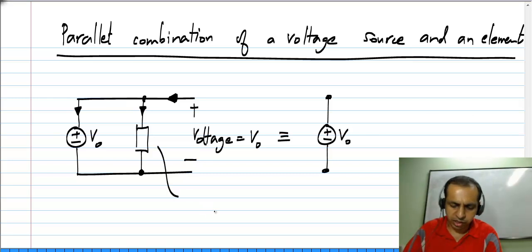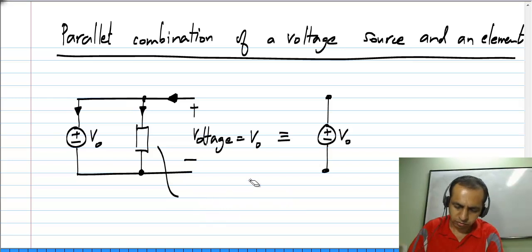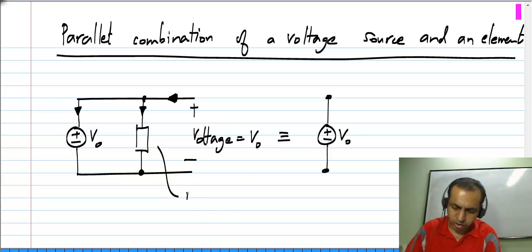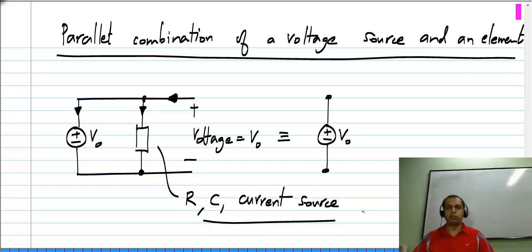This element can be anything — it can be a resistor, an inductor, a capacitor, or even a current source. So the parallel combination is just equivalent to a voltage source.